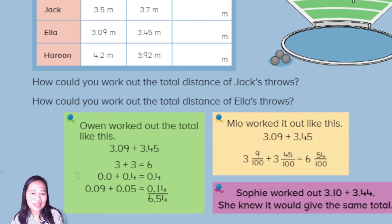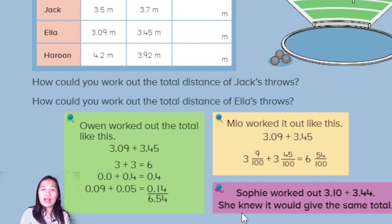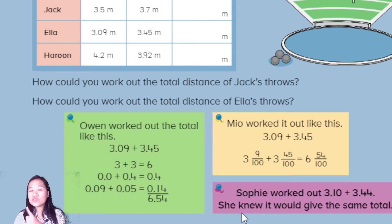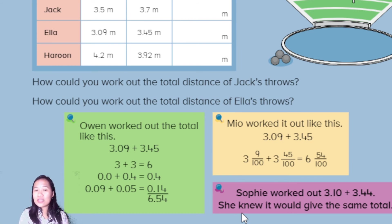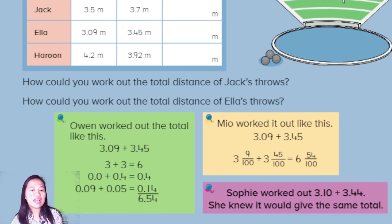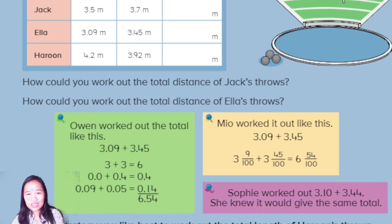Sofia's method: change 3.09 to 3.10 by adding 0.01, then subtract 0.01 from 3.45 to get 3.44. Then 3.10 + 3.44 = 6.54 — the same answer. Do you have another way to calculate?